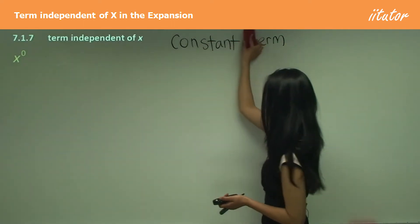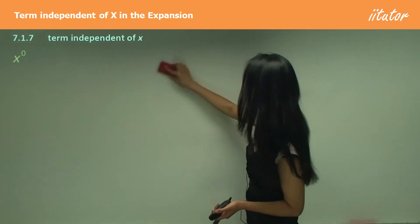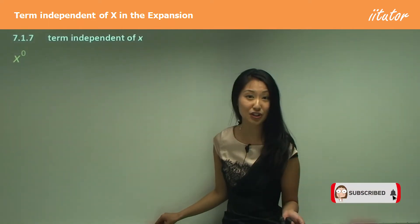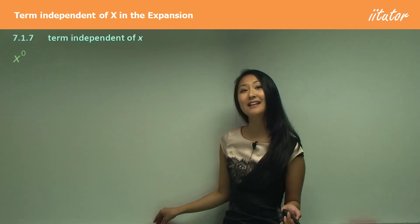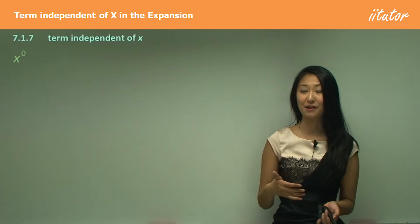Not every expansion will have a number that's independent of x, but there will be expansions, for example when you have (x + 2) squared, where you do have a number just by itself without x, and that's what we're finding.